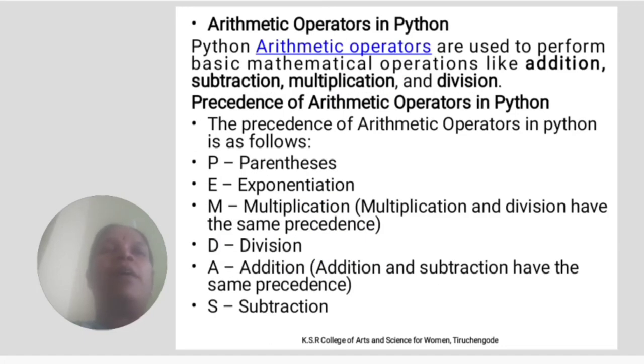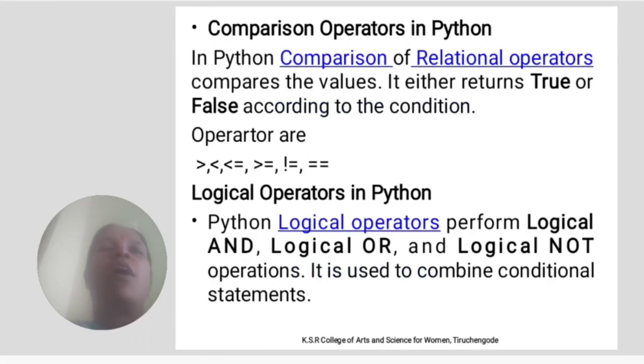Arithmetic operators in Python. The arithmetic operators are used to perform basic mathematical operations like addition, subtraction, multiplication, and division. Precedence of arithmetic operators in Python is as follows: P for parenthesis, E for exponents, M for multiplication, D for division, A for addition, and S for subtraction.